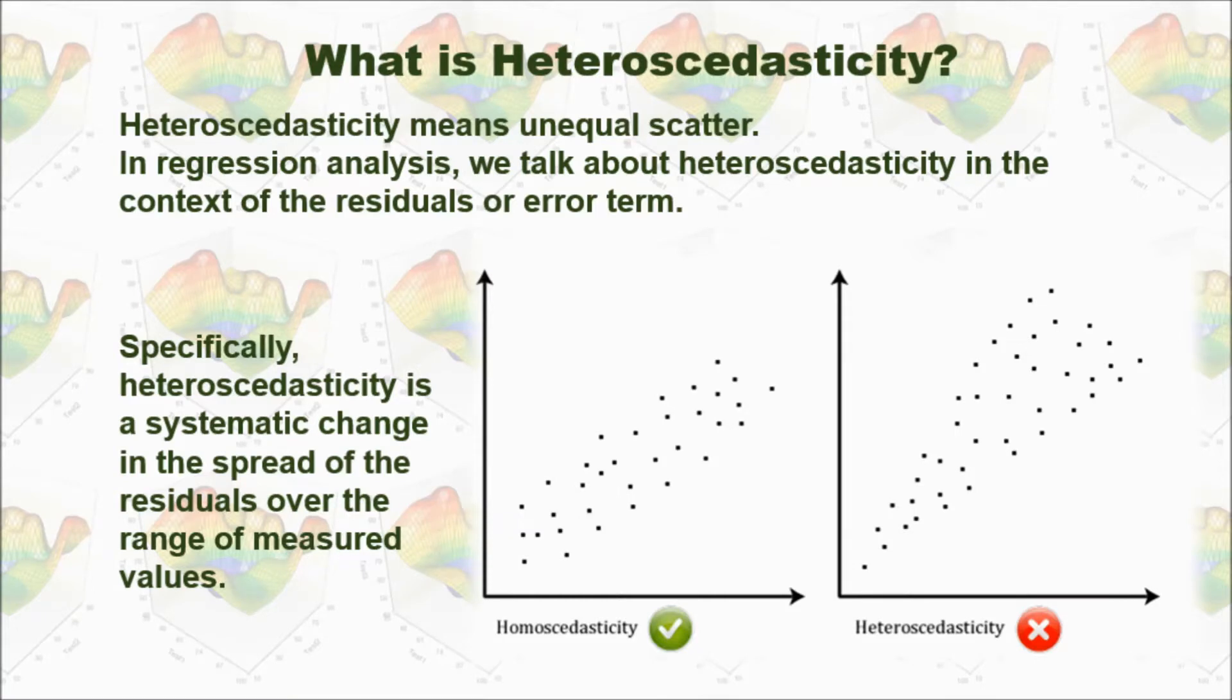Heteroscedasticity means unequal scatter. See this plot. It shows linear relationship between independent variable and dependent variable. When we check the residual, you can see the residual is about the same, although when independent variable increases.